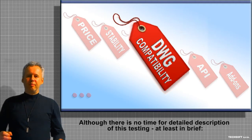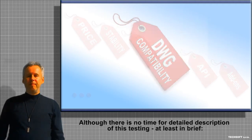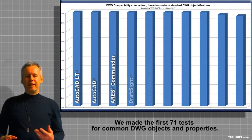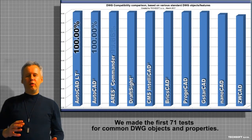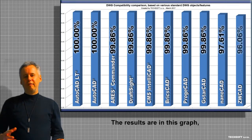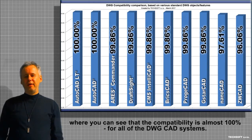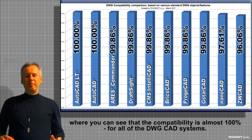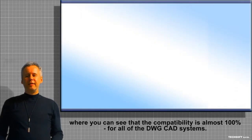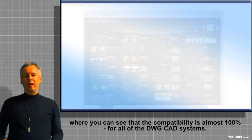Although there is no time for a detailed description of this testing, at least in brief: we made the first 71 tests for common DWG objects and properties. The results are in this graph, where you can see that the compatibility is almost 100% for all of the DWG CAD systems.